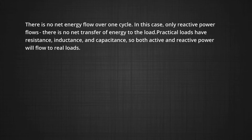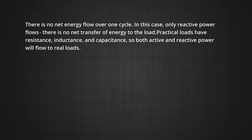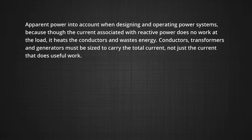Practical loads have resistance, inductance and capacitance. Both active and reactive power will flow to the real loads. That is why power engineers measure apparent power as the magnitude of the vector sum of active and reactive power. Apparent power is the product of the root mean square of the voltage and current. Apparent power into account when designing and operating power systems because though the current associated with reactive power does not work at the load, it heats the conductor or it wastes the energy.